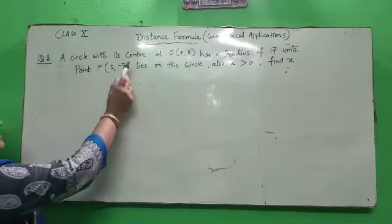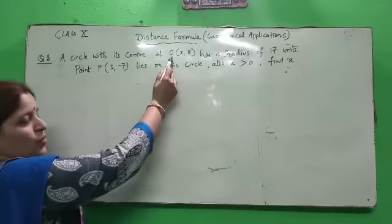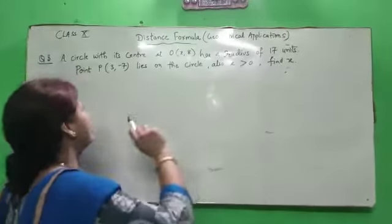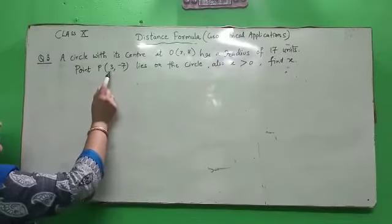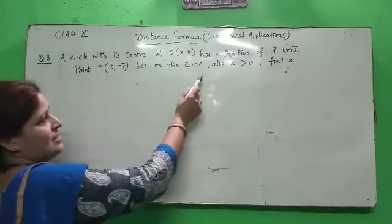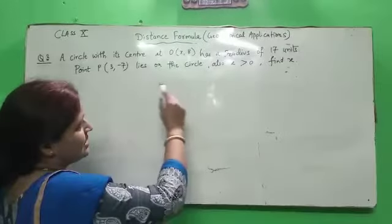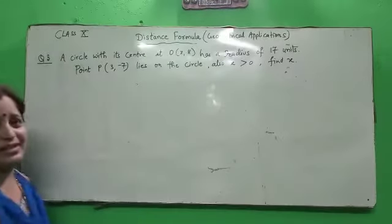A circle with its center at O, coordinates are X and 8, has a radius of 17 units. Point P(3, -7) lies on the circle and also X is greater than 0. Then in such condition find the value of X.